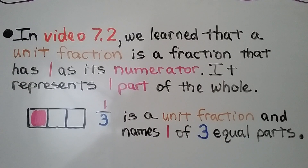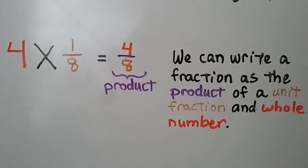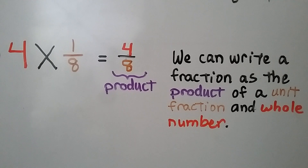In video 7.2, we learned that a unit fraction is a fraction that has 1 as its numerator. It represents one part of the whole. 1/3 is a unit fraction and names one of three equal parts. Here we have 4 times 1/8. It's equal to 4/8, and the fraction 4/8 is the product. We can write a fraction as the product of a unit fraction and a whole number.